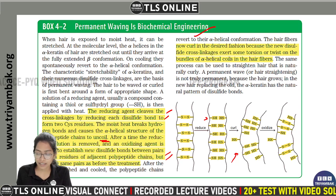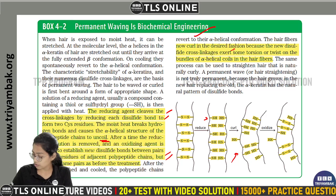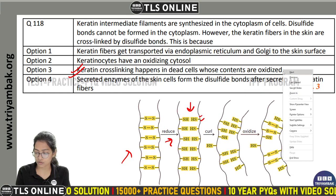This experiment was performed on hair fibers, examining their curling. According to this, keratin crosslinking happens in dead cells whose contents are oxidized. When the environment is oxidized, disulfide bonds form there. So the third option is correct.